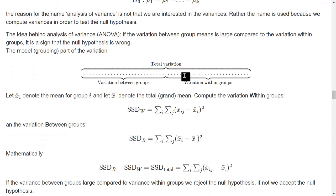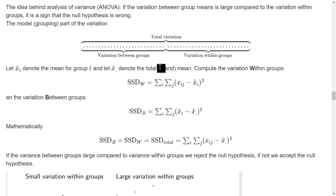So the idea is to take the variation in the data, and then look at it and say, well, some of this variation is variation within the groups. Some of this variation is variation between the groups.